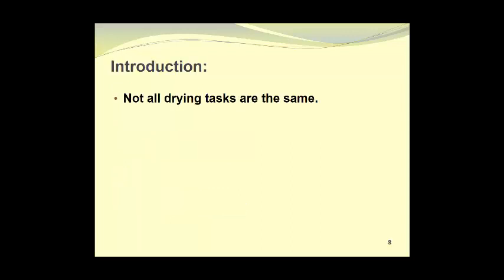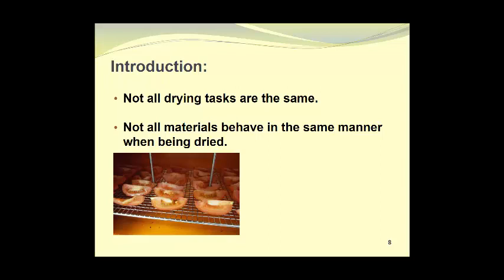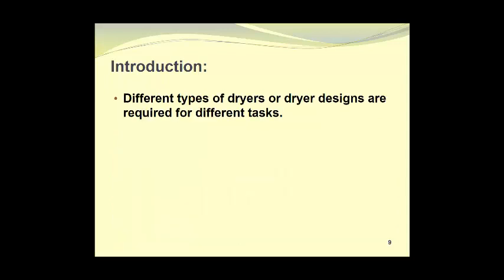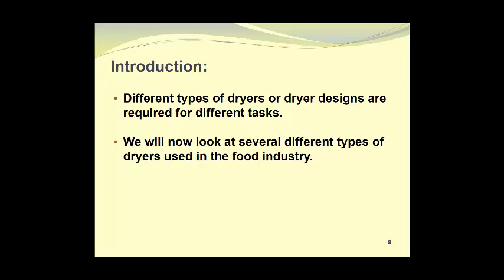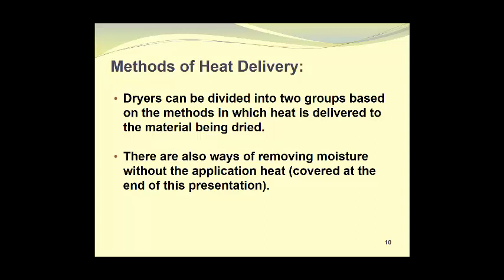Not all drying tasks are the same. Not all materials behave in the same manner when they are being dried. Tomatoes behave quite differently than mangoes in the same drying conditions. Different types of dryers or dryer designs are required for different tasks. We will now look at several different types of dryers used in the food industry. Dryers can be divided into two groups, based on the methods in which heat is delivered to the material being dried. There are also ways of removing moisture without the application of heat, and we will cover some of these at the end of this presentation.